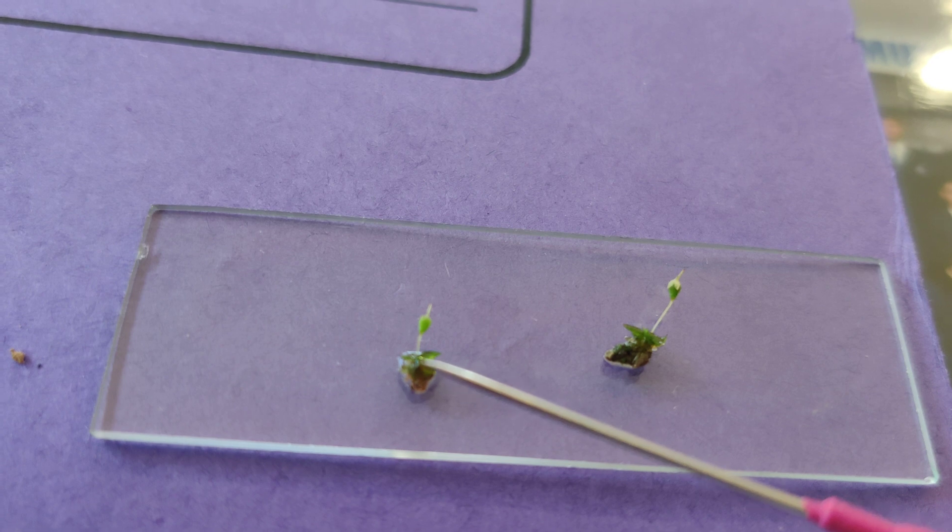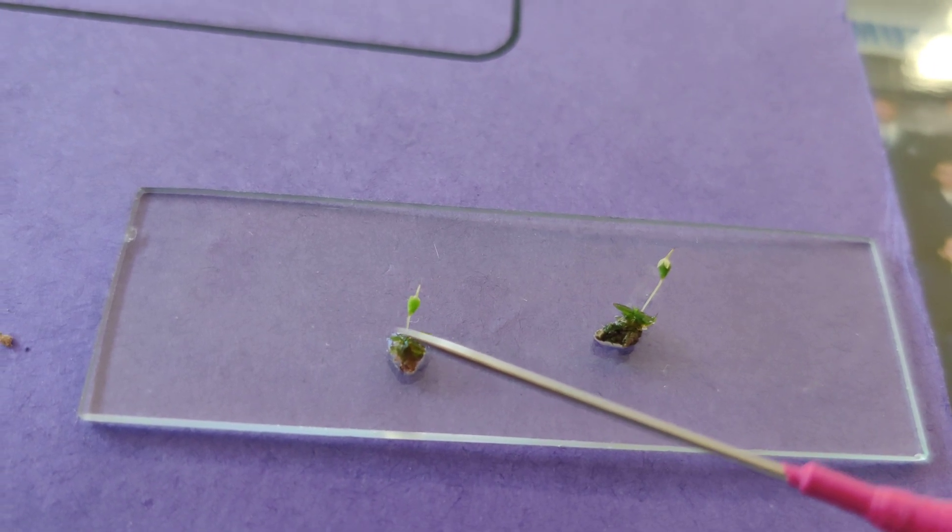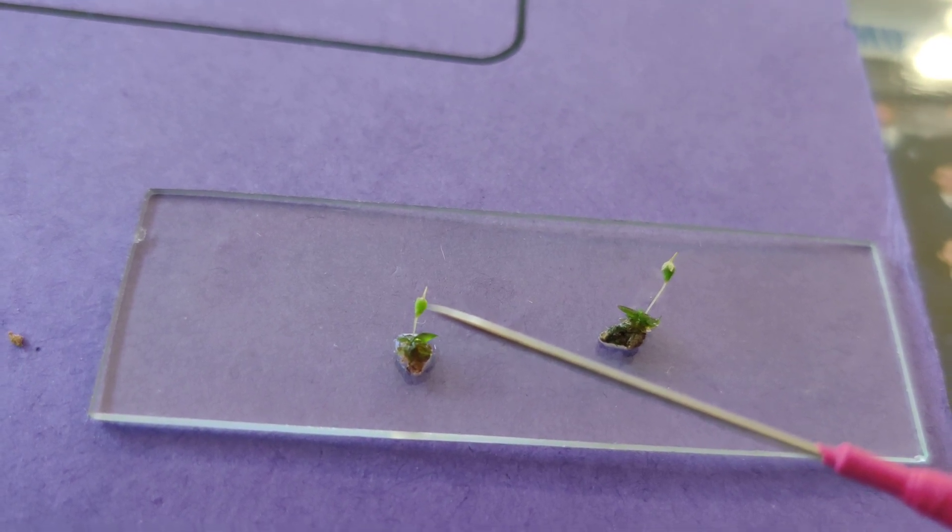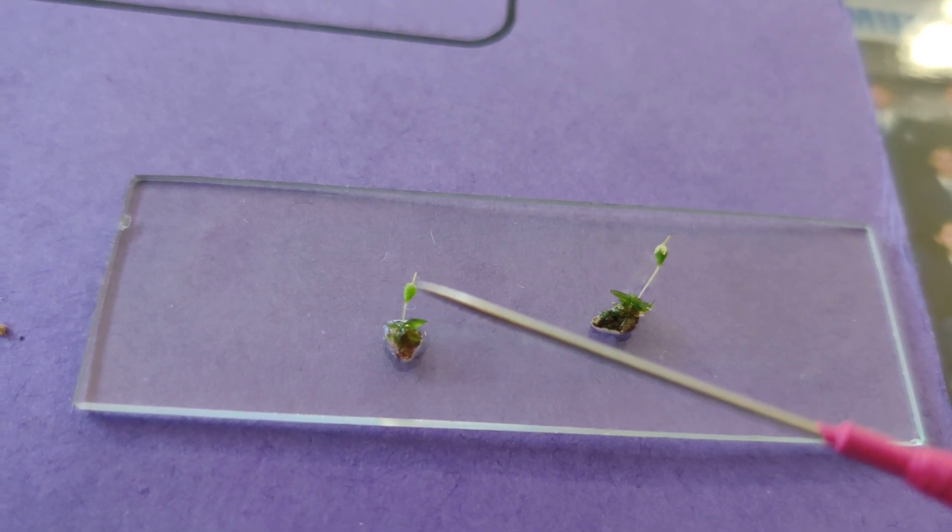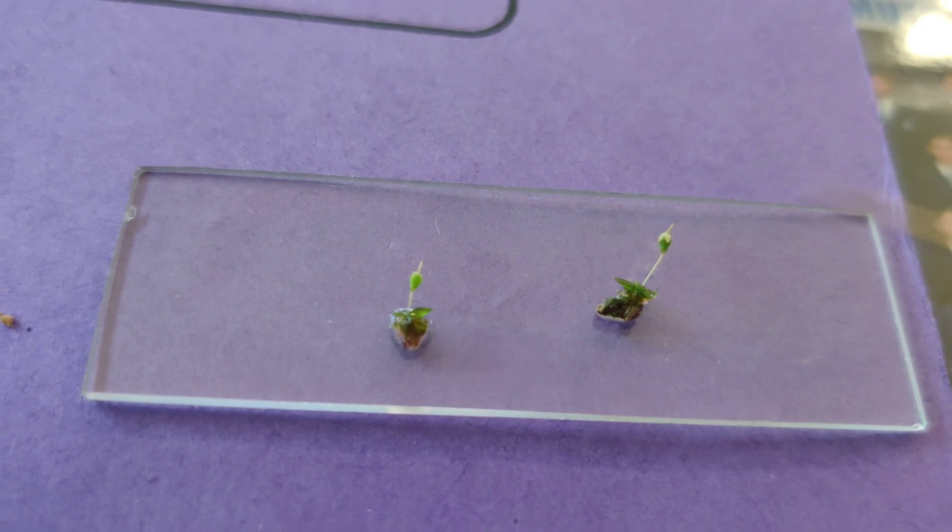Here, this is gametophyte. And this is sporophyte. Foot inside. This structure is seta. And this structure is capsule. So, this sporophyte is partially dependent on gametophyte.